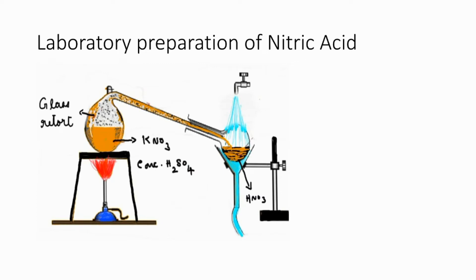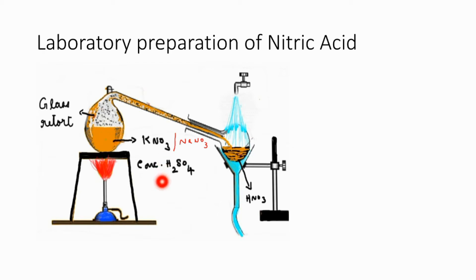Now let's learn the laboratory preparation of nitric acid. In order to prepare nitric acid in the laboratory we need an apparatus called a glass retort, which is entirely made up of glass. To this glass retort we add potassium nitrate — potassium nitrate or sodium nitrate can be used, both are white colored solid substances. We also add concentrated sulfuric acid and heat the reaction mixture below 200 degrees Celsius.